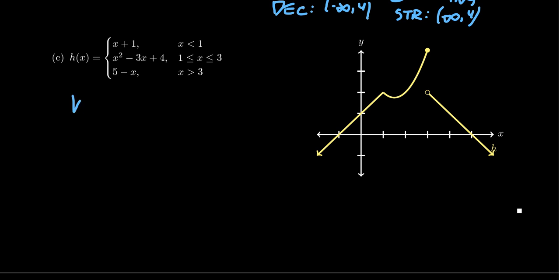If we take h of 0, h of 0 would be in the compartment x less than 1. So we're going to take 0 plus 1 and we get 1. If you want to do h of 1, well, where does h of 1 fall? Notice 1 is not less than 1, 1 is equal to 1. So you use the middle piece. You're going to get 1 squared minus 3 times 1 plus 4, which is going to give you 1 minus 3 is negative 2 plus 4, which equals 2.